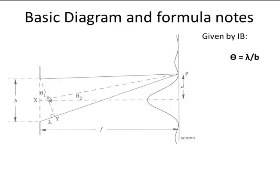Now, if I look at the angles here, as it happens, my first angle, angle theta 1, is equal to the wavelength of the light divided by B. This is given by IB. So this is the standard statement.